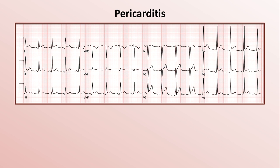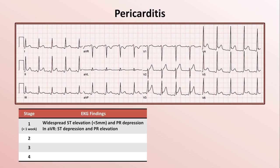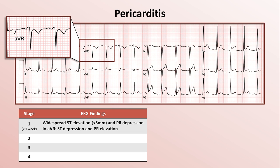The EKG findings in pericarditis are sometimes described as having four stages. In the first, seen within the first week after symptom onset, there are widespread ST elevations less than 5 mm in height, along with PR depression. Additionally, in AVR specifically, there is ST depression and PR elevation. We see that PR elevation in AVR demonstrated in this EKG. In Stage 2 there is normalization of findings. Stage 3, the timing of which is very variable, consists of widespread T wave inversions. Stage 4 is normalization once again.